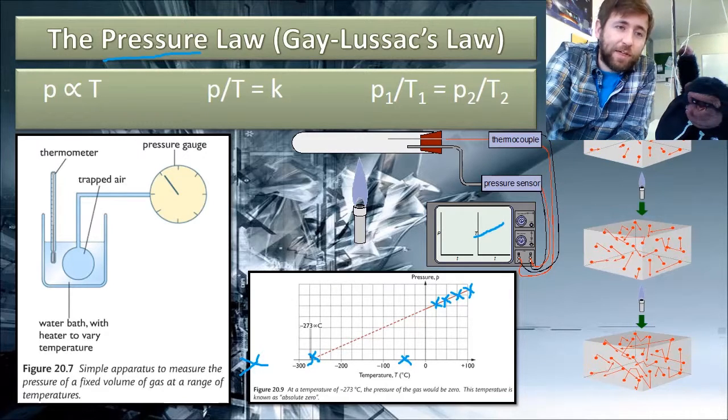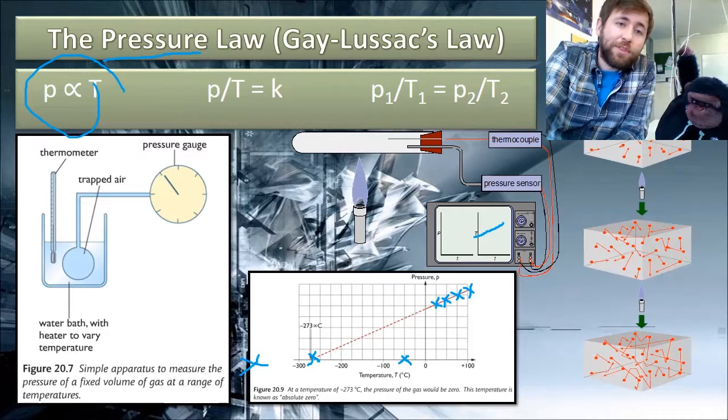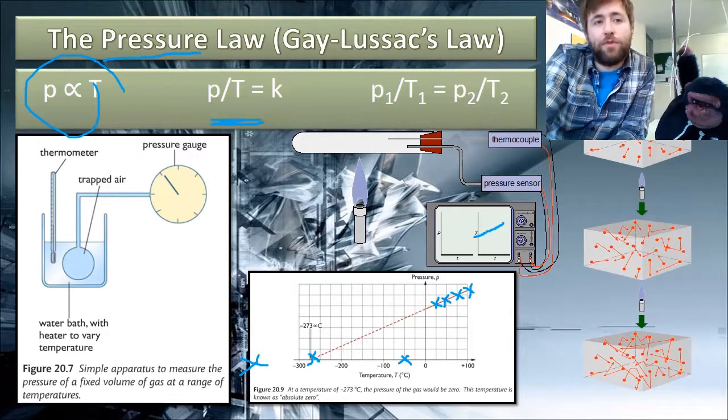Again, the three ways to write it. Pressure is proportional to temperature for a fixed volume for a fixed mass of gas. Pressure over temperature is a constant, useful for deriving the ideal gas equation in a minute. And the pressure over temperature initially is equal to the pressure over temperature afterwards. This kind of little diagram on the right-hand side is a useful way just to visualize why, if you're fixing the volume, does the pressure increase with temperature. We're giving them more kinetic energy, so they're hitting the sides more often with more energy, so the pressure increases.